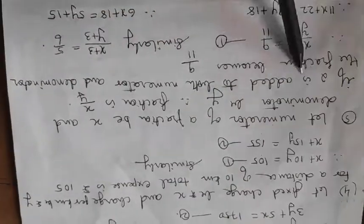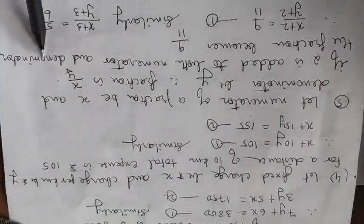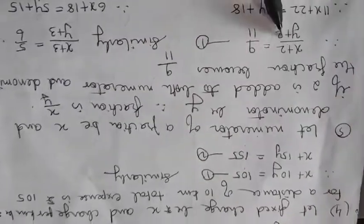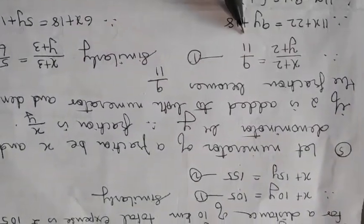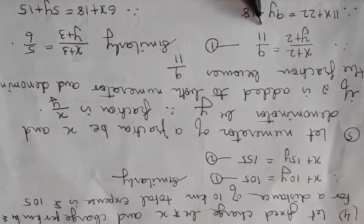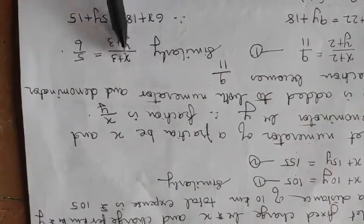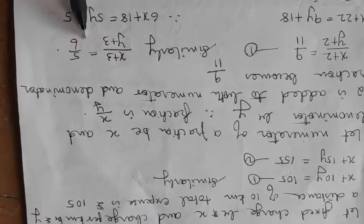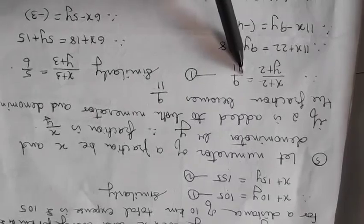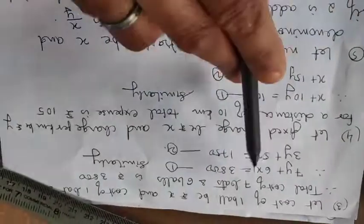Now the first statement says if 2 is added to both numerator and denominator, the fraction becomes 9 by 11. So you are adding 2 to the numerator, you are adding 2 to the denominator, the fraction becomes 9 by 11. Second statement given is 3 is added to both the numerator and denominator. So x plus 3, y plus 3 and the fraction becomes 5 by 6.